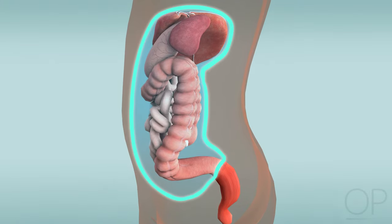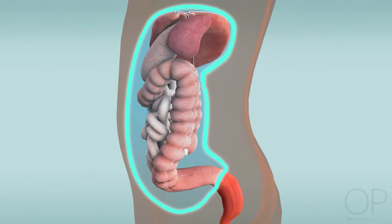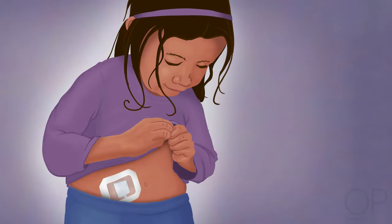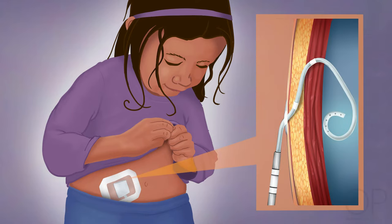The peritoneum is full of blood vessels. It acts as a filter to help clean blood during peritoneal dialysis. Before dialysis can start, a special tube called a peritoneal dialysis catheter will need to be placed inside your child's abdomen. Part of the catheter stays outside of the body, connecting to the peritoneal cavity. This allows us to pump and drain an important liquid, called dialysate, into your child's abdomen.